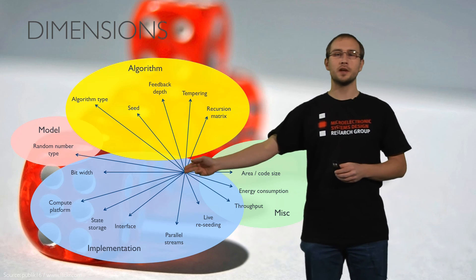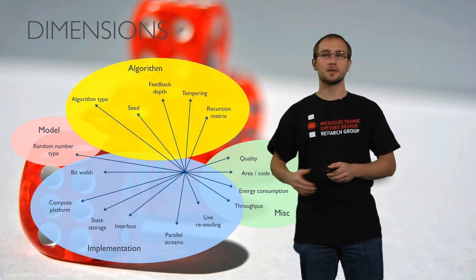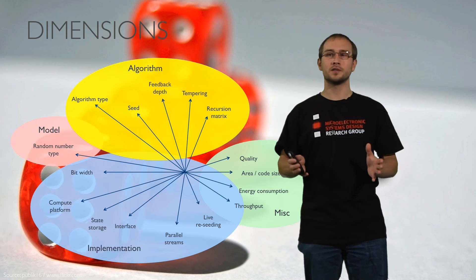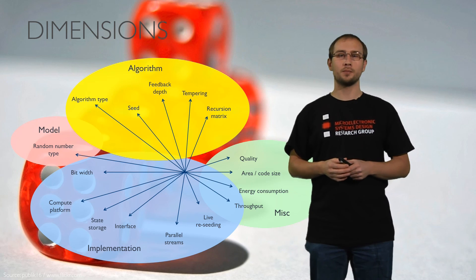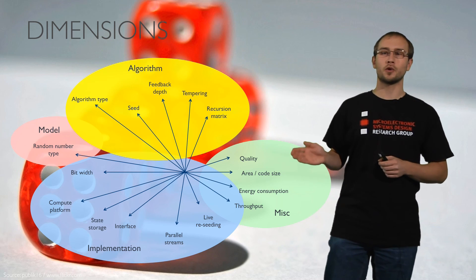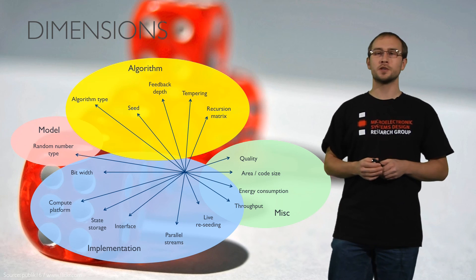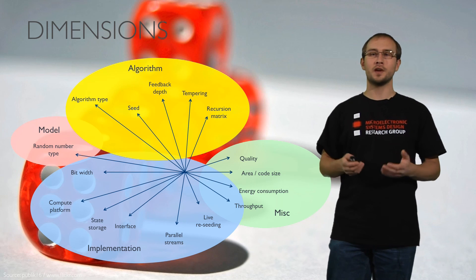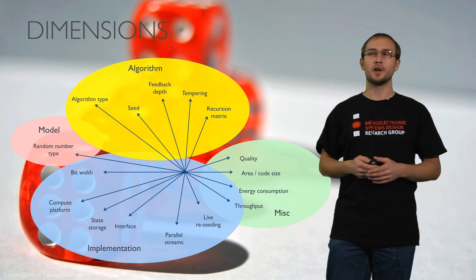We have implementation related dimensions that means everything related to the implementation of the algorithm like the compute platform, the state storage, interfacing and all those technical details. And we have the non-functional dimensions related to the quality area, the code size, energy consumption, throughput and so on.